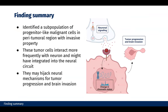To summarize our findings: we have identified a subpopulation of progenitor-like cells specifically residing in the peritumoral region with invasive properties. We are seeing that these tumor cells are potentially interacting more frequently with neurons and may have integrated into the normal neuronal circuits. From the cell communication analysis and the ATAC analysis, we suggest that they may actually hijack neuronal mechanisms for tumor progression and invasion.